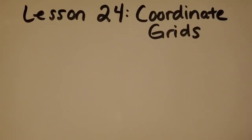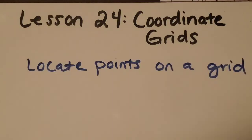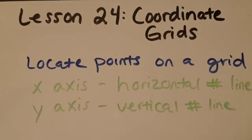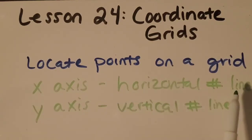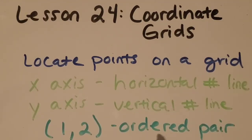So to be able to really understand this awesome map that we're going to be looking at, I need to give you a little bit more information about coordinate grids. You will be able to locate points on a grid using the x-axis, which is a horizontal number line, and a y-axis, which is the vertical number line. And you're going to learn about something called an ordered pair. It's just a set of two numbers that help us find a point on the grid.